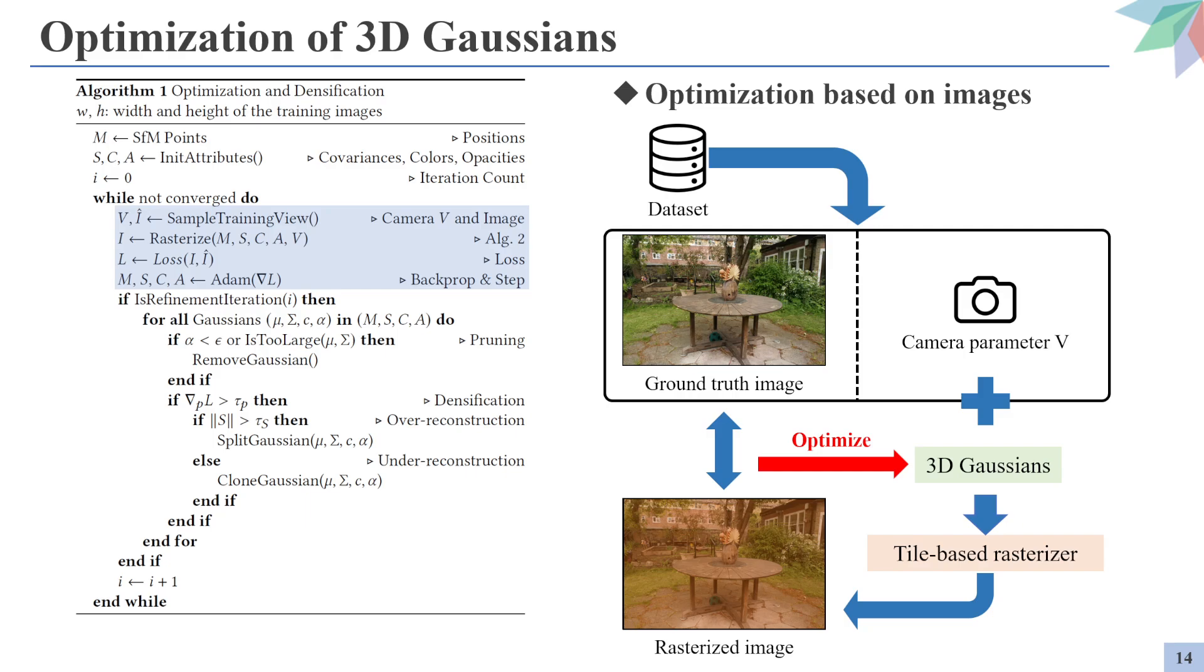The optimization process is divided into two main parts. The first part, shown here, optimizes the parameters of the 3D Gaussians based on the rendered scenes. The dataset consists of pairs of images and corresponding camera parameters. The camera parameter along with the attributes of the 3D Gaussians are passed into the rasterizer, which the authors call the tile-based rasterizer. The rasterizer outputs the synthesized view of the corresponding camera parameter, which is then compared with the ground truth image of that view. The loss is computed between the two, and the gradients computed optimize the attributes of the 3D Gaussians.